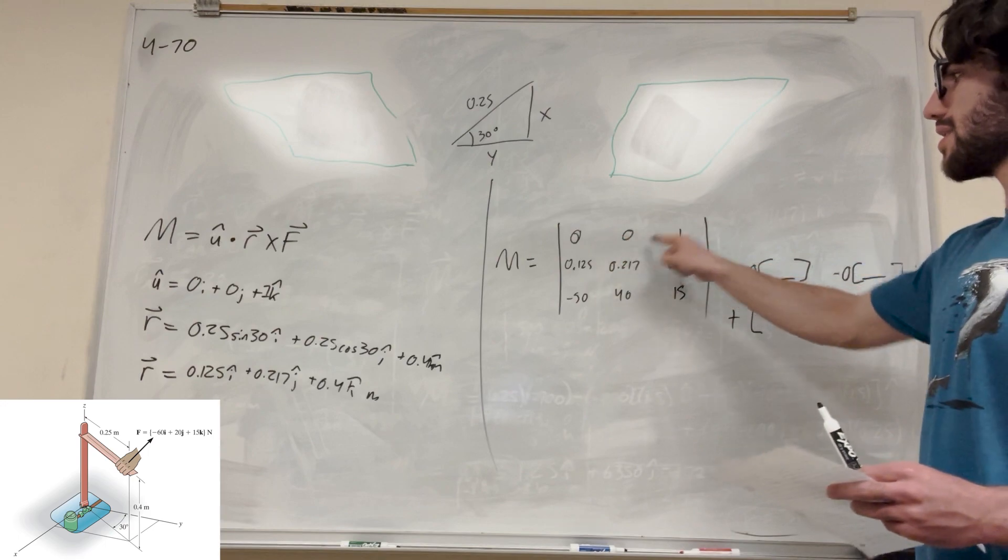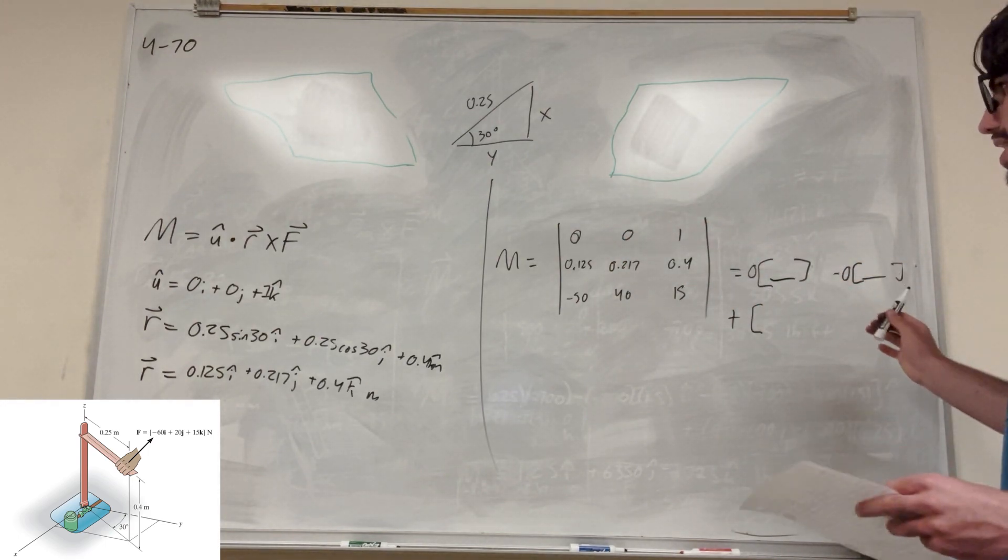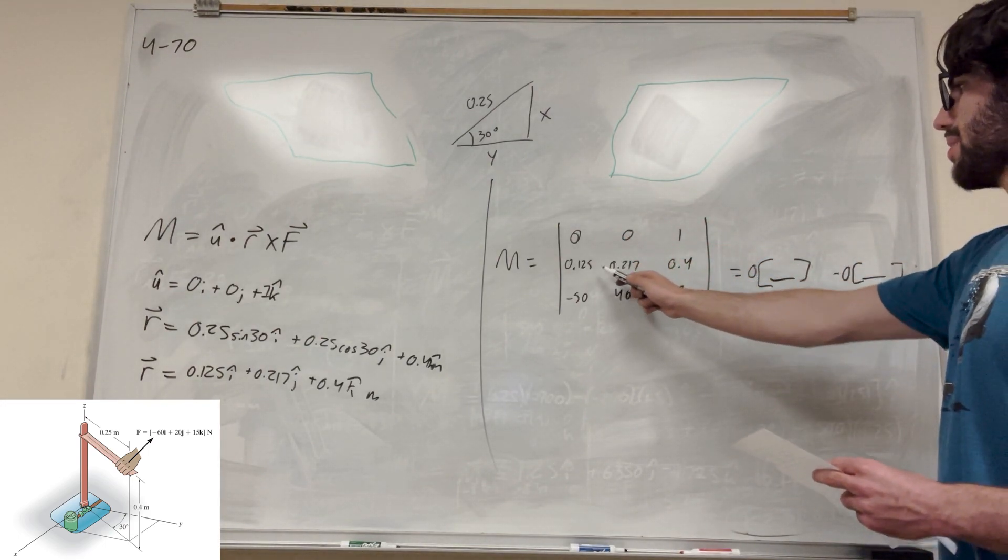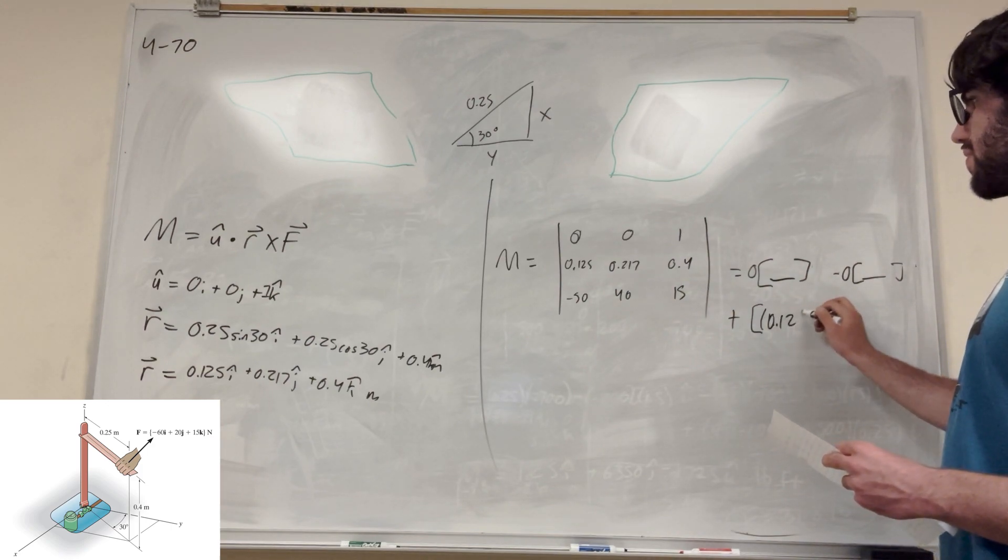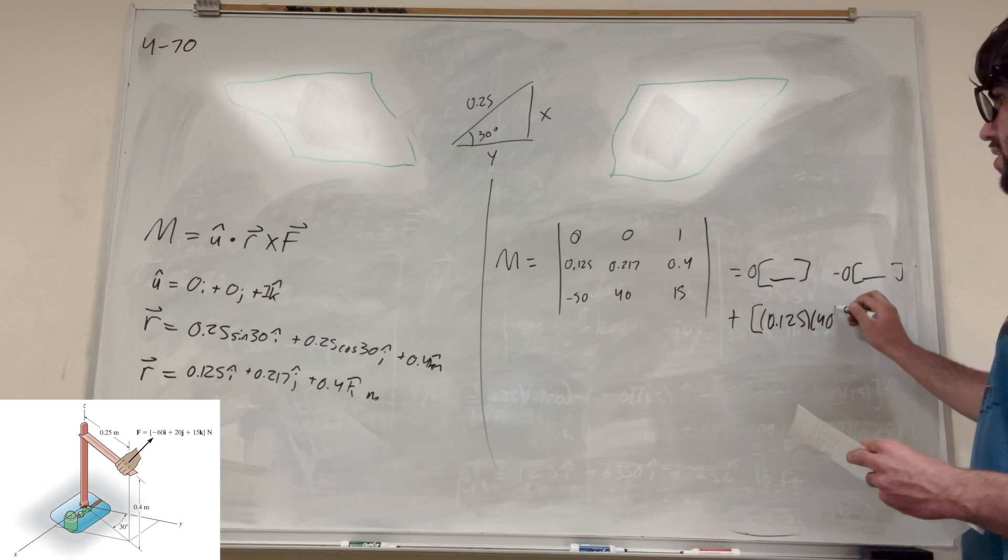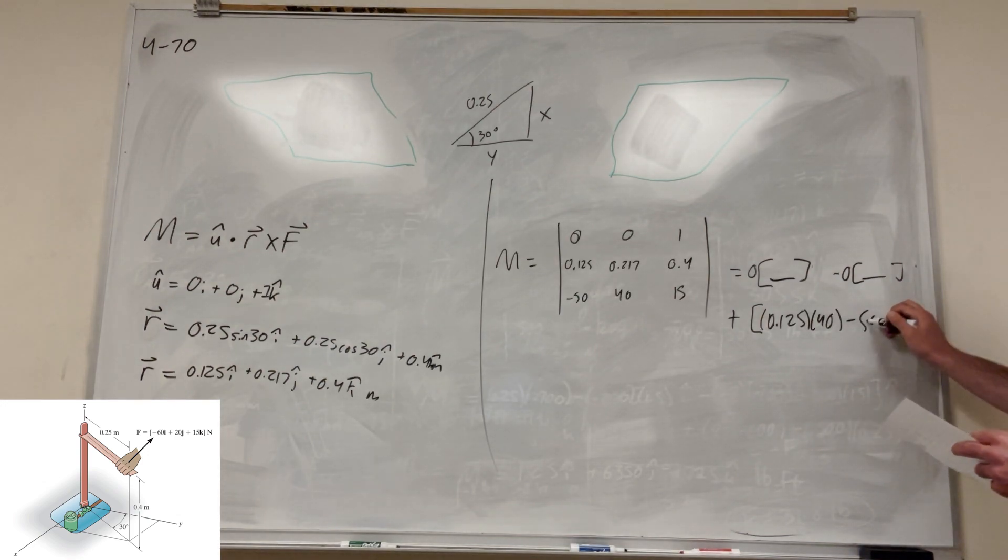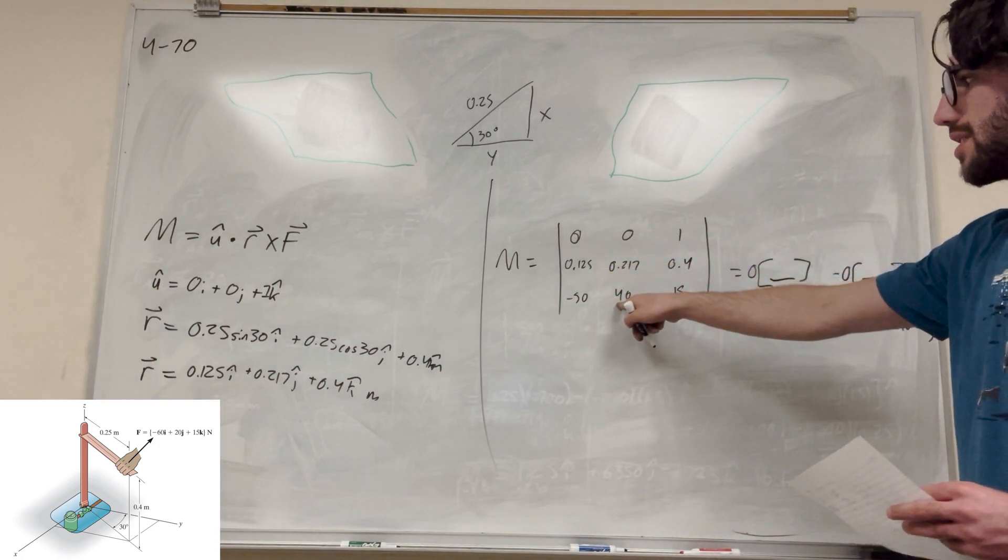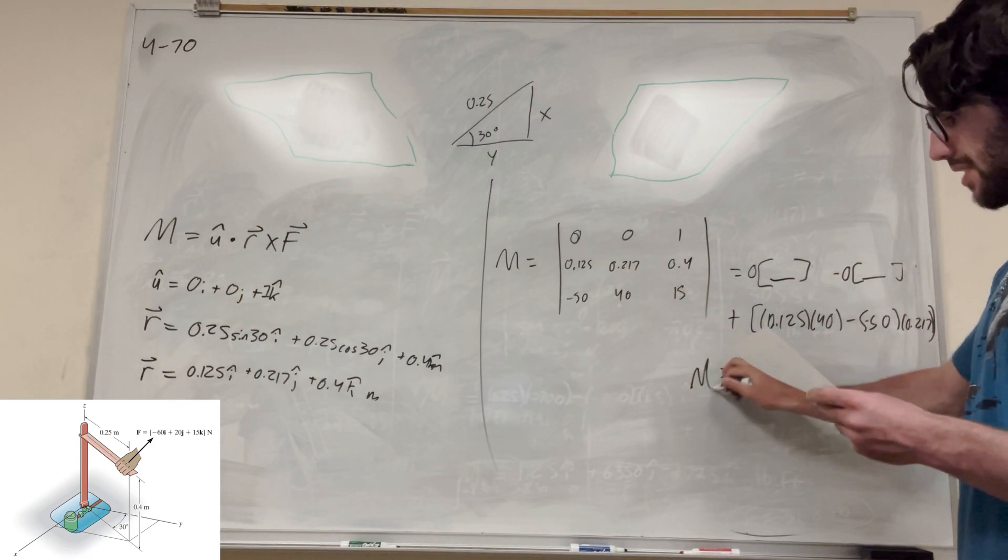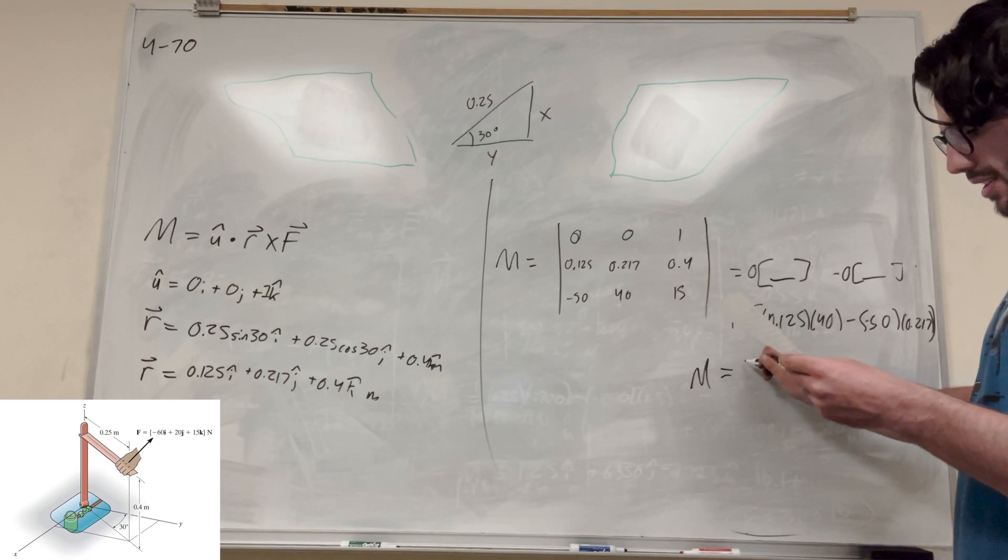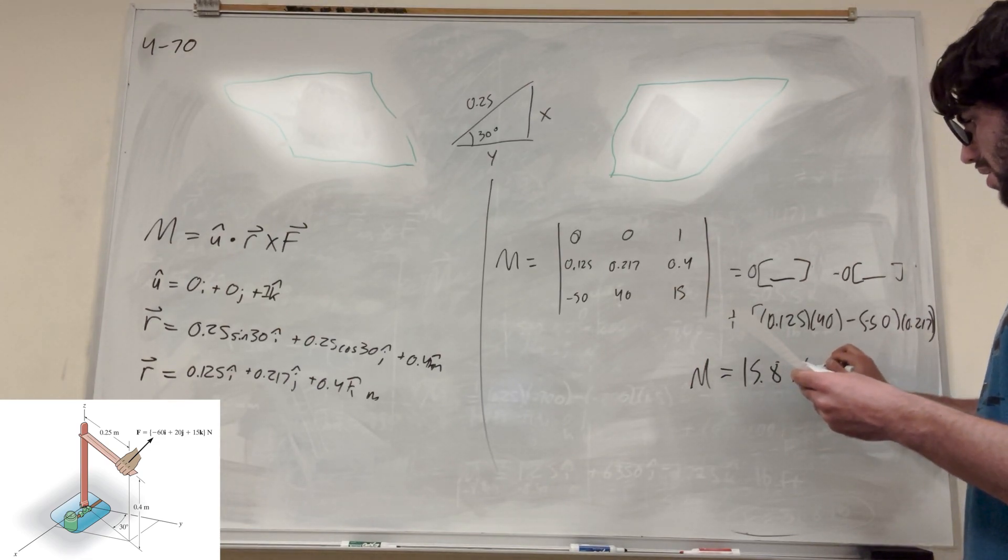So because we're doing this, we do not do i, j, k. Get rid of that. So then it'll be 1, so then we're going to do 0.125 times 40 minus negative 50 times 0.217, right? Just doing this times this minus this times this. And if you do that, you're going to get m is equal to 15.8 newton meters.